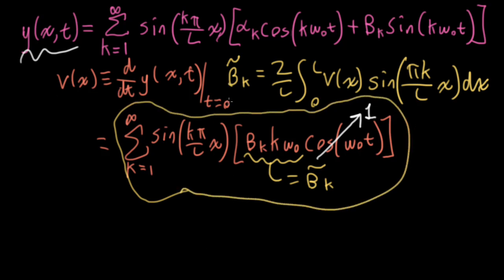And then I could use this Fourier analysis integral in order to find the beta k tilde. And then once I found the beta k tilde, I could say, okay, well, beta k is that beta k tilde divided by k omega naught. And that would give me my beta k.